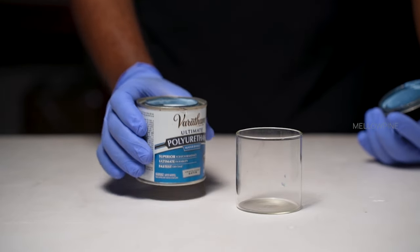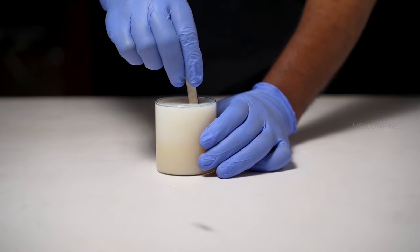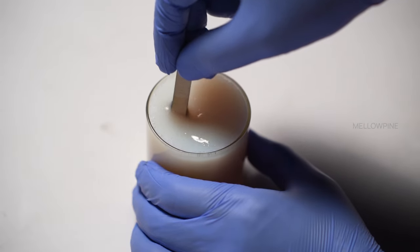Next, mix the polyurethane thoroughly. Some polyurethane may have a flattening agent that settles at the bottom. Mixing it well ensures an even distribution of the flattening agent.